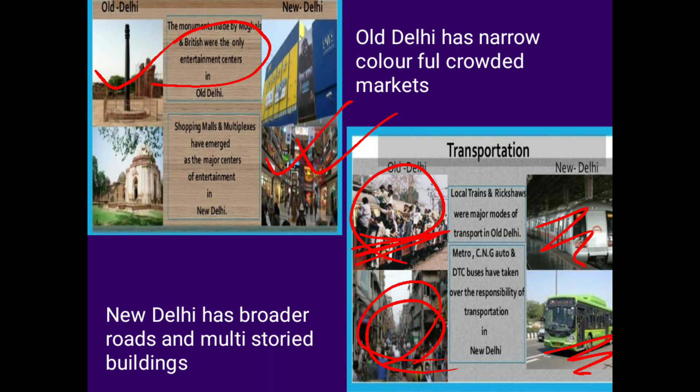Another important thing to remember is that the Government of India and all important offices are located here — the Parliament and the Secretariat Building are also located in Delhi.